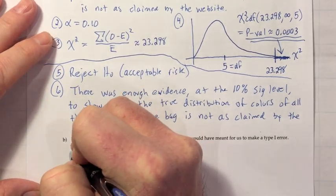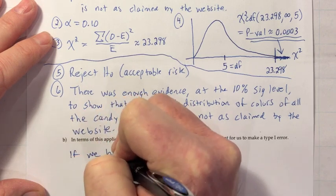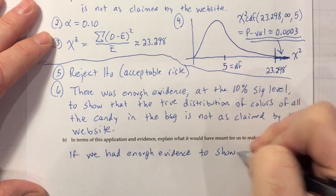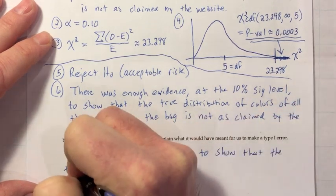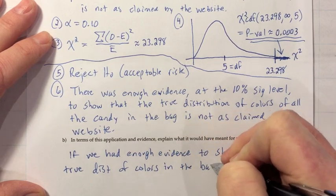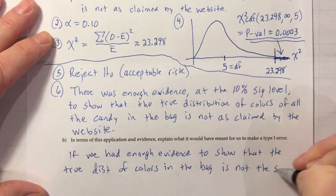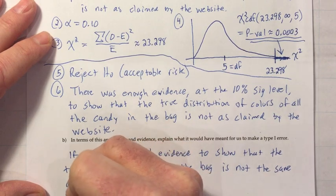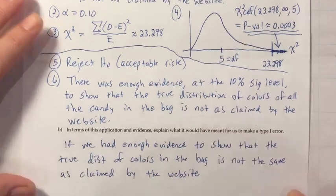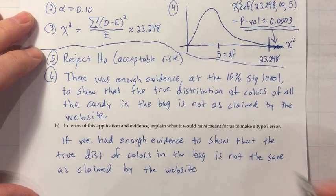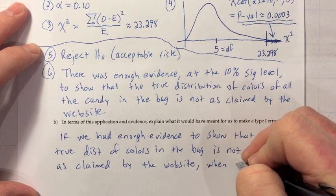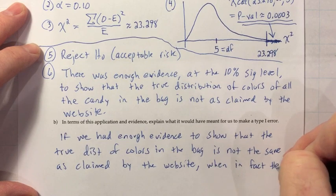Writing that out: if we have enough evidence to show that the true distribution of colors in the bag is not the same as claimed by the website — that's the reject part — this conclusion would be an error when in fact the distribution really is as claimed by the website. That captures both components: the rejection and the incorrectness.